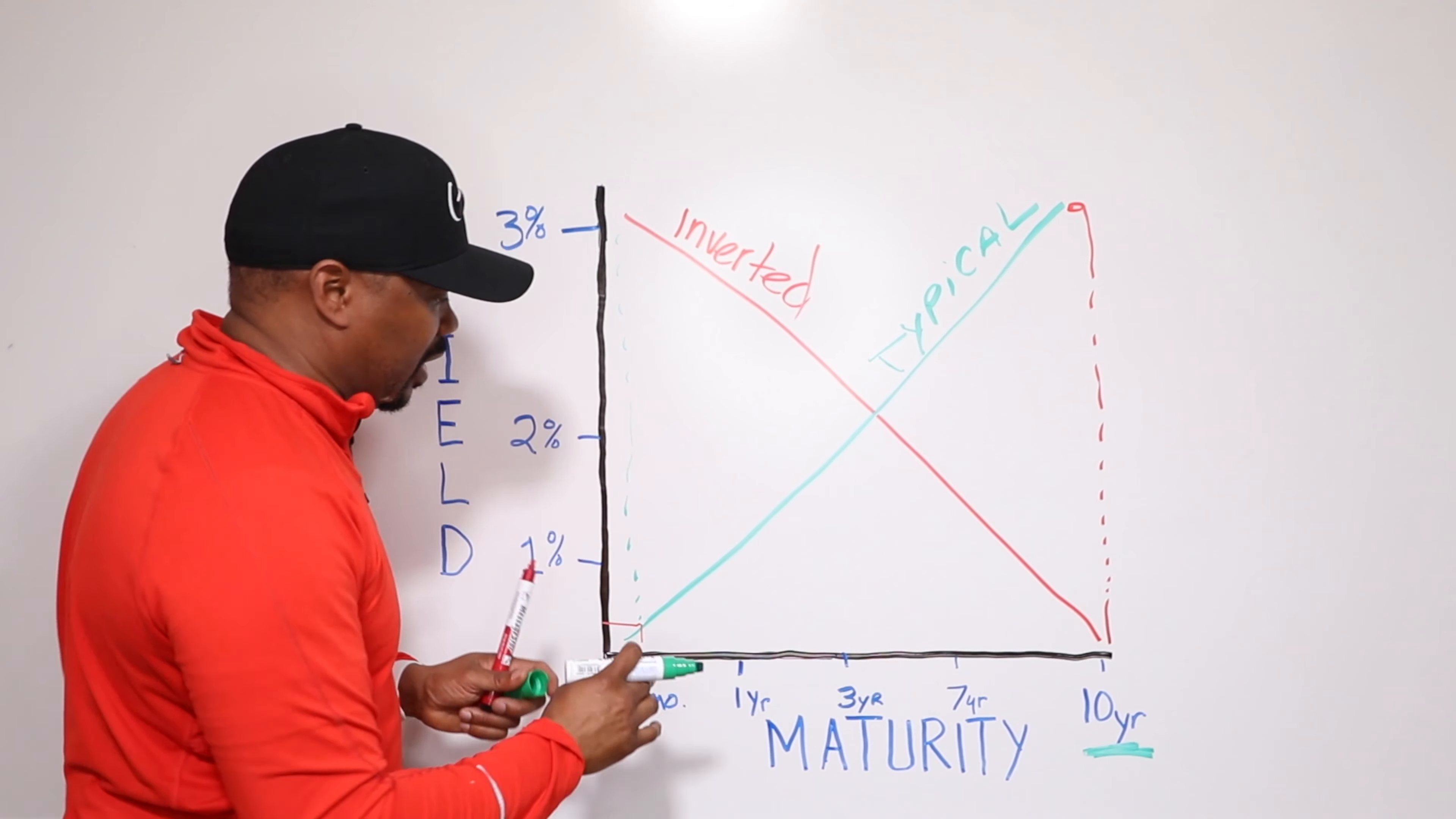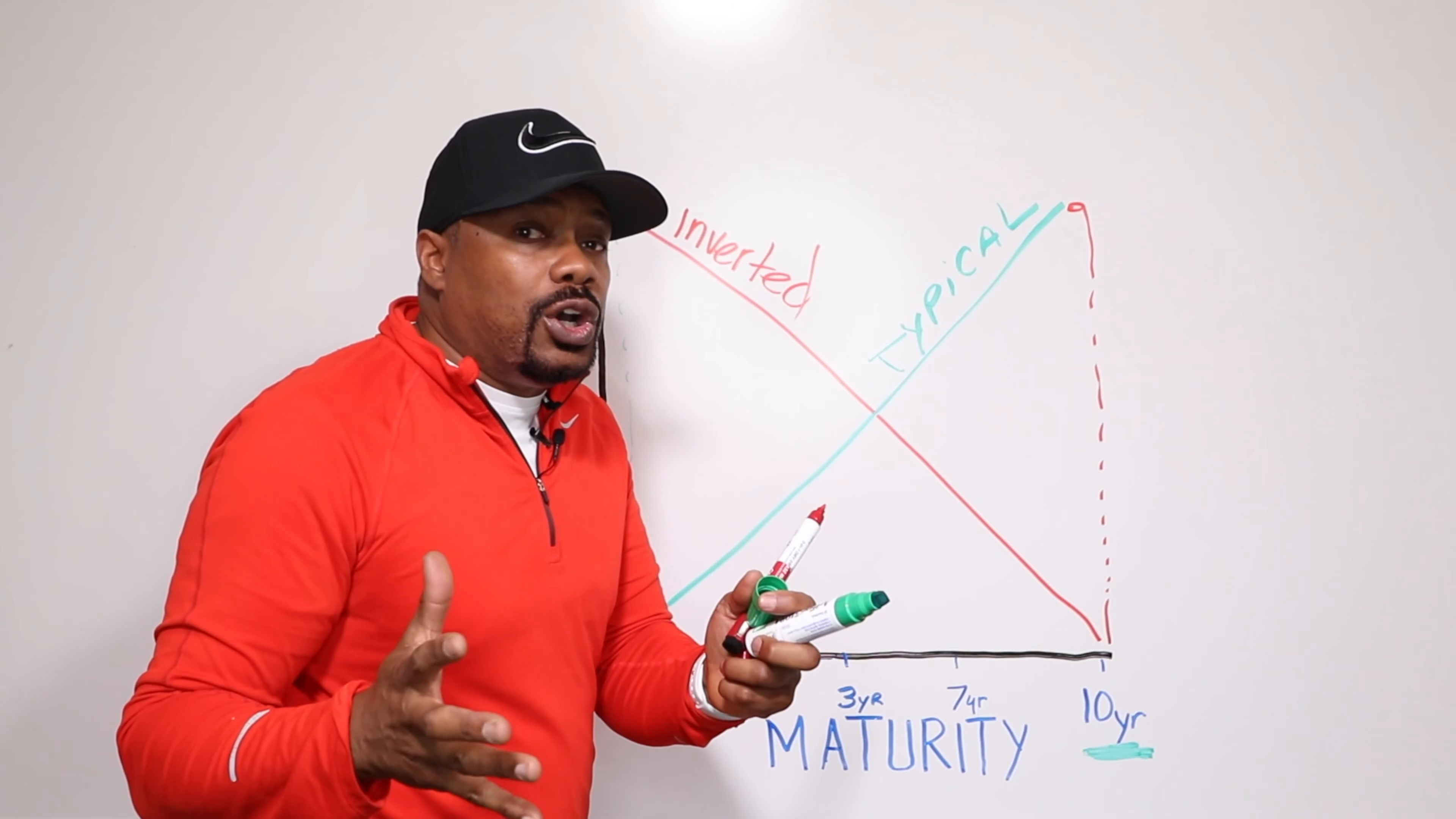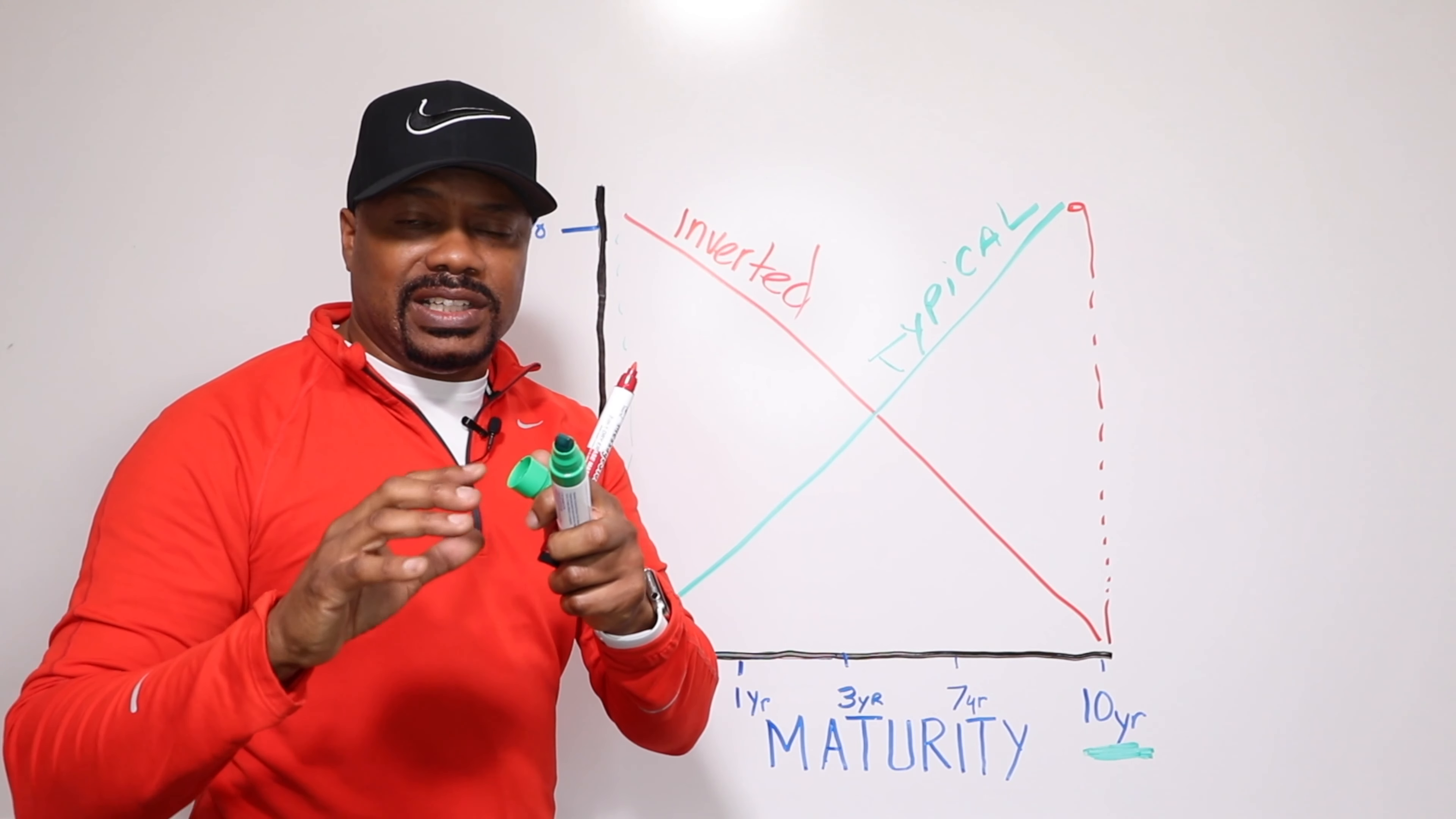The problem with that, the problem with that is less bondholders are willing to hold those long-term bonds. Those 10, 15, 30-year bonds. And the reason that could be is because what they're afraid of, they could be a little less certain about the economic future. And so because of that, they're pulling back a little bit. And then when this short-term pays better than long-term, that's when we have an inverted yield curve. And really what that is, it's a difference in spread.